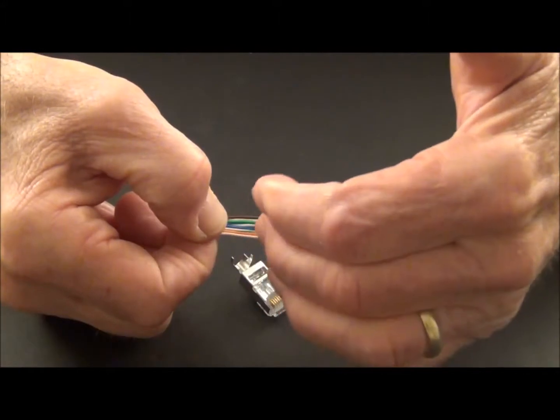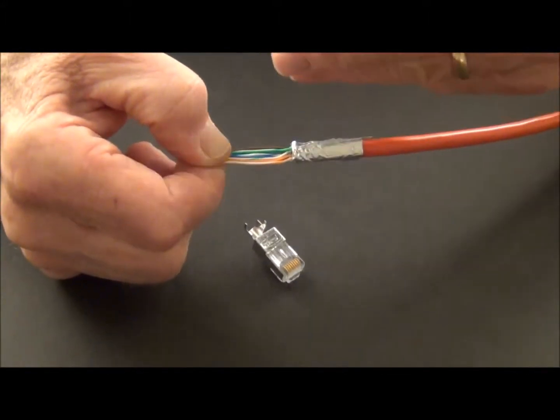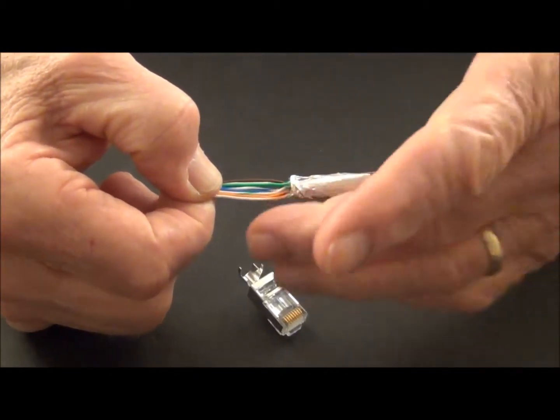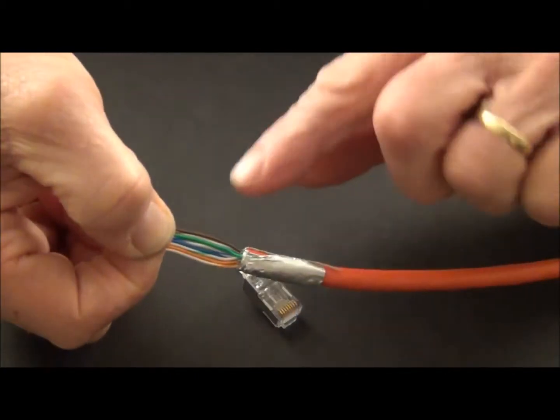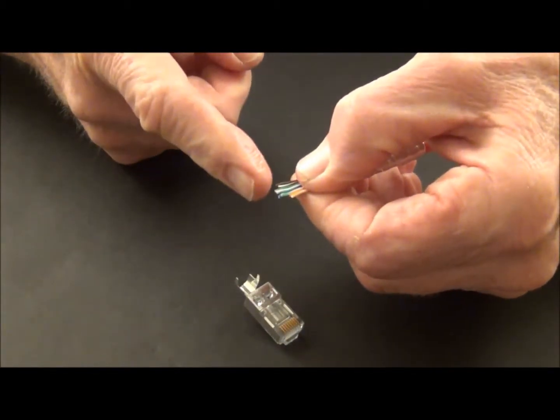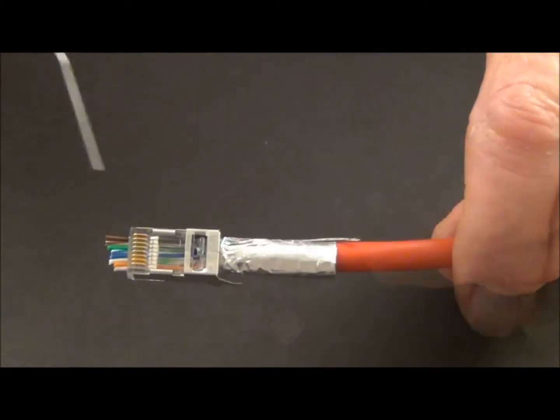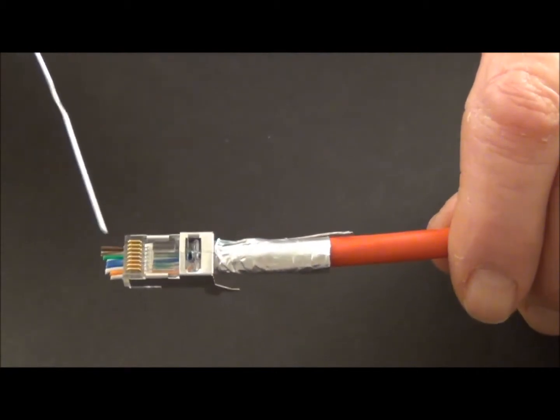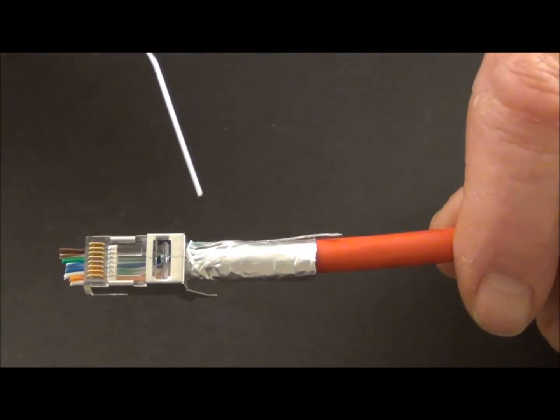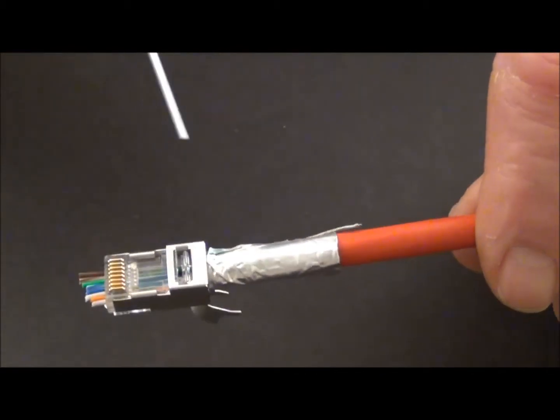So let's separate the pairs. Okay, I've combed out my kinks and my conductors. I laid them out. I'm doing the B. So I start with orange white, end with brown. And of course, my foil is in place, my drain wire. So what I need to do now is trim the conductors and then insert it into the connector. Okay, my conductors, I've pushed them through the front end. My pair, they haven't changed on me. They're correct. And I'm going to start inserting the jacket back here.